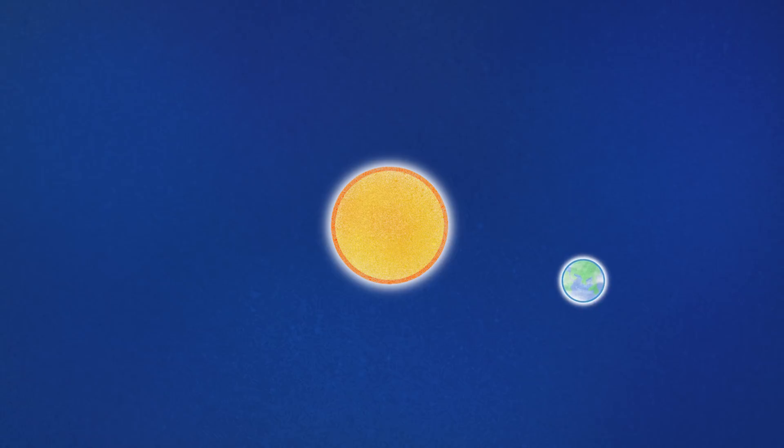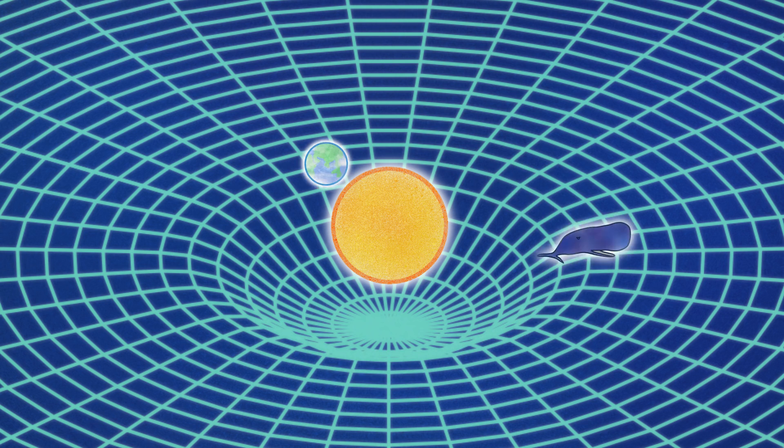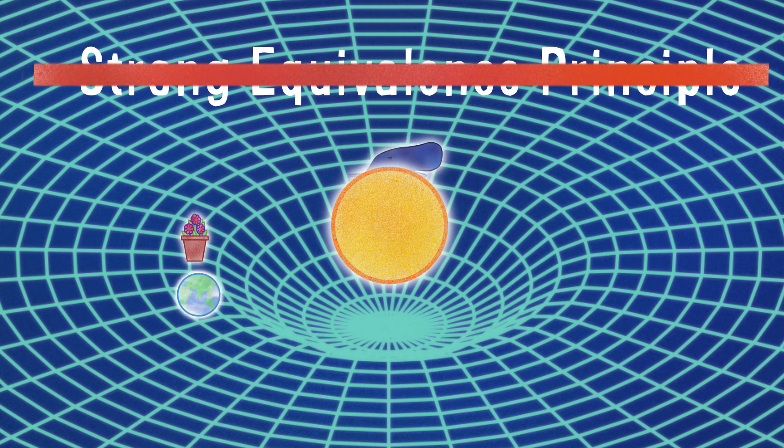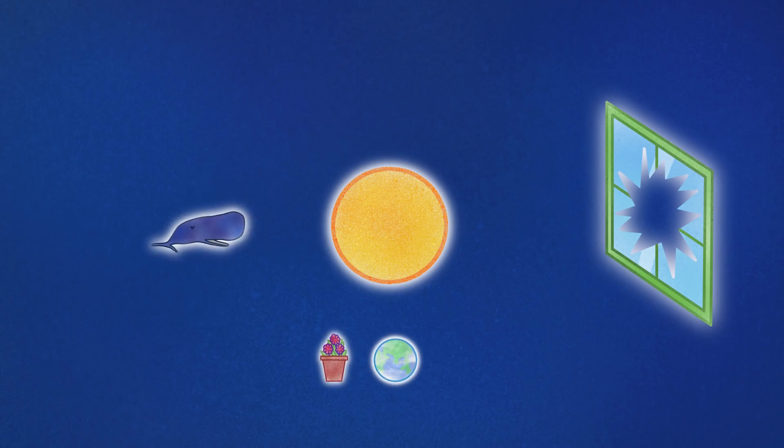The Earth is following the straightest path it can through warped spacetime round and round the Sun. But this only works if objects all actually fall the same way. If this equivalence principle is wrong, then Einstein's whole idea of gravity as geometry goes out the window. So far, it doesn't seem to be wrong.